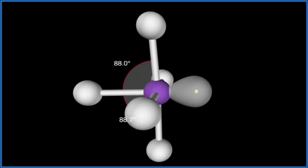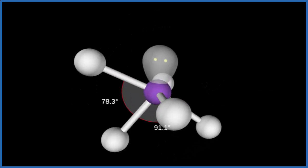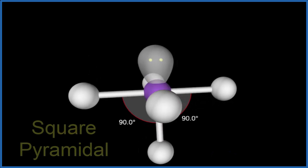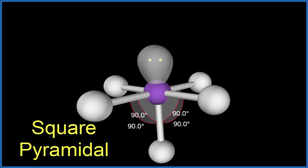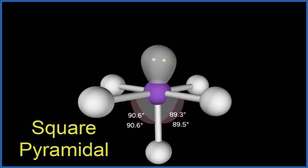When we add the lone pair, it occupies space. It pushes these atoms down. We end up with what's called a square pyramidal molecular geometry for SbBr5 2-. So you see the lone pair up here, that's pushing everything down.